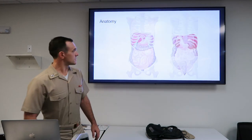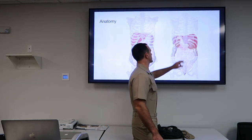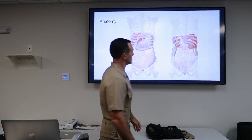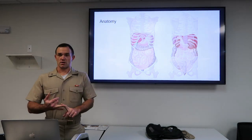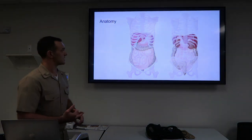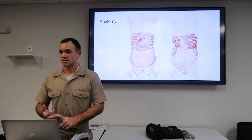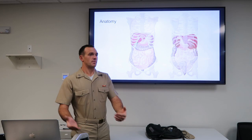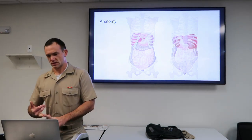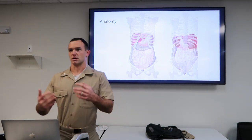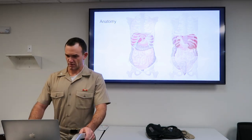Things that are in the retroperitoneum are the kidneys, the aorta, the IVC, the pancreas, and the ureters. Things that are in the peritoneum are the stomach, the bowels, some blood vessels, the gallbladder, and the liver.